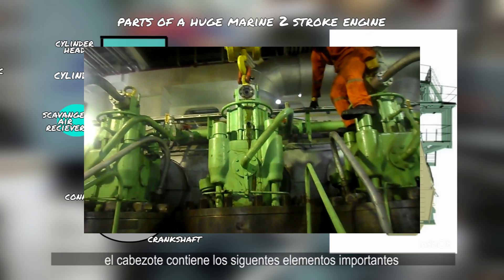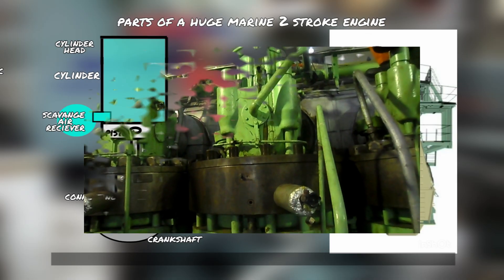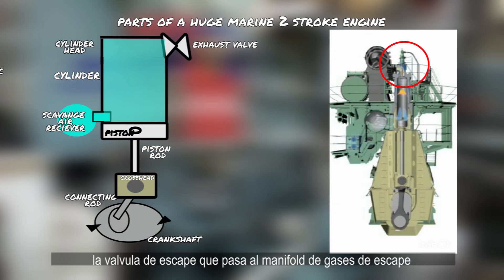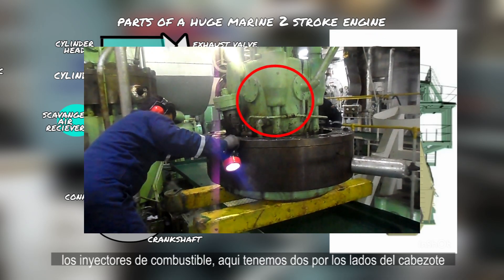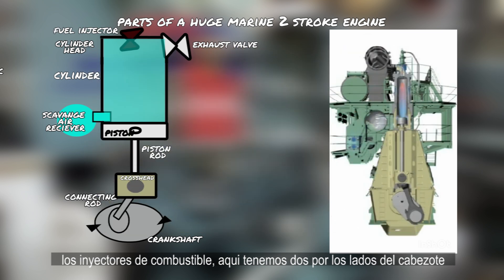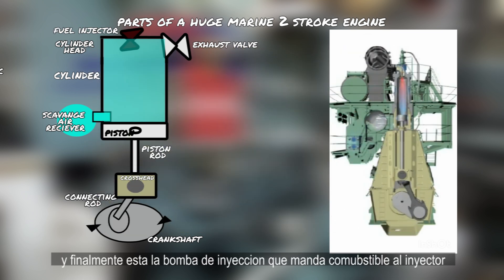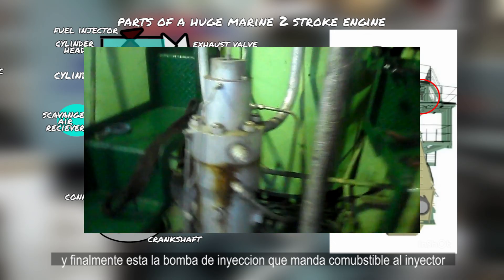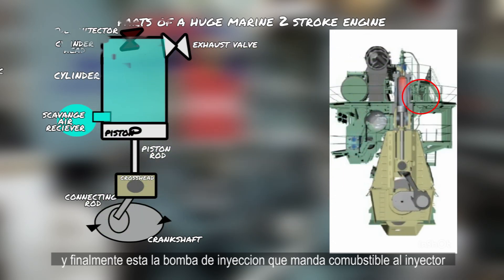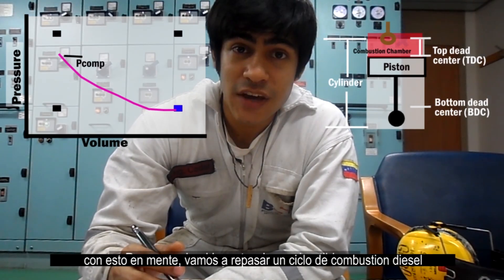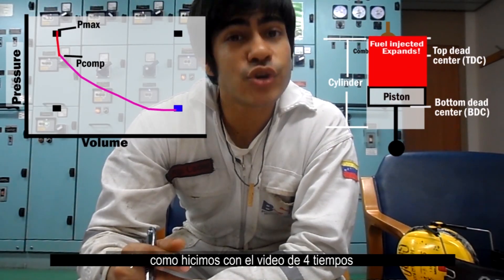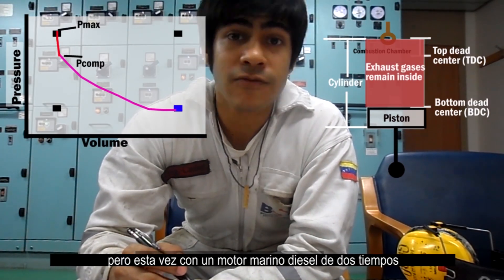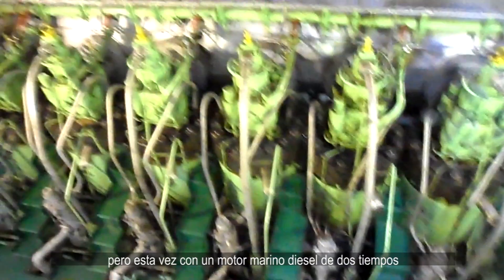On the top of the cylinder, we have the cylinder head, which houses the following important elements: the exhaust valve, which will open to the exhaust manifold; the fuel injectors, which in this case we have two on the sides of the cylinder head; and finally, the fuel injection pump, which supplies the fuel to the fuel injectors.